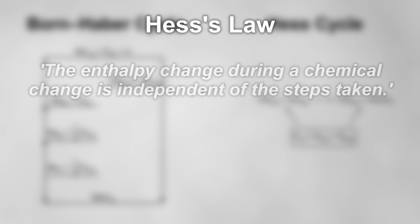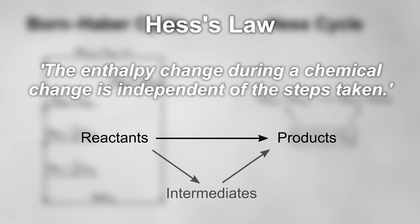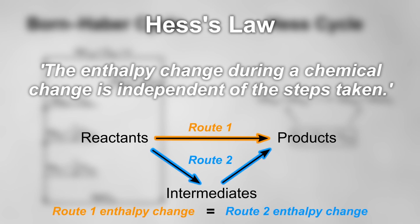Hess's law states that the enthalpy change during a chemical change is independent of the steps taken. In other words, as long as you start at the same reactants and end at the same products, it makes no difference how you get there and what intermediates you go by — the overall enthalpy change will be the same.